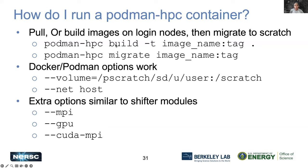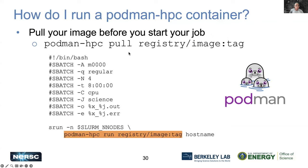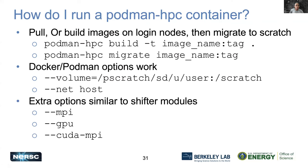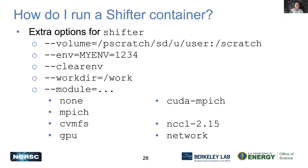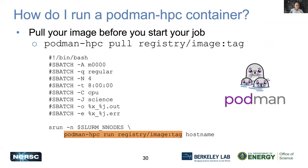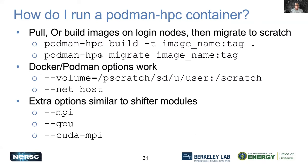To run a Podman container, you can pull and build images on the login nodes and then migrate them to scratch. Use the podman build command with the image and tag. You can then migrate the image and use Shifter modules — specifying whether it's MPI, GPU, or CUDA MPI as needed.